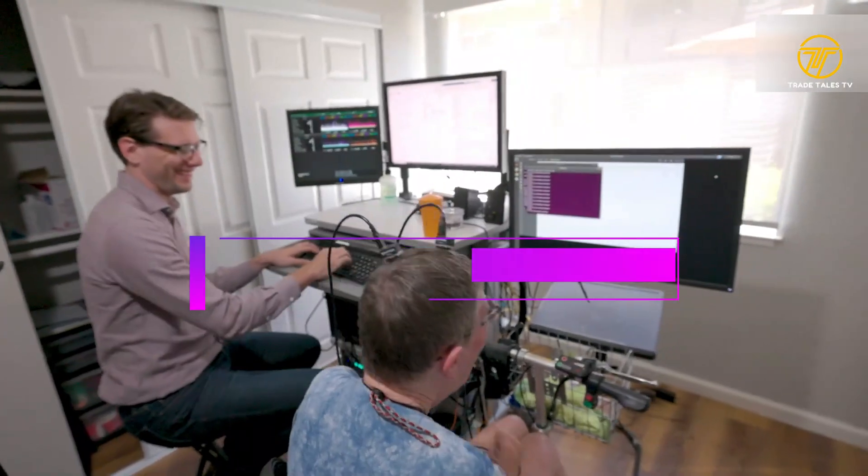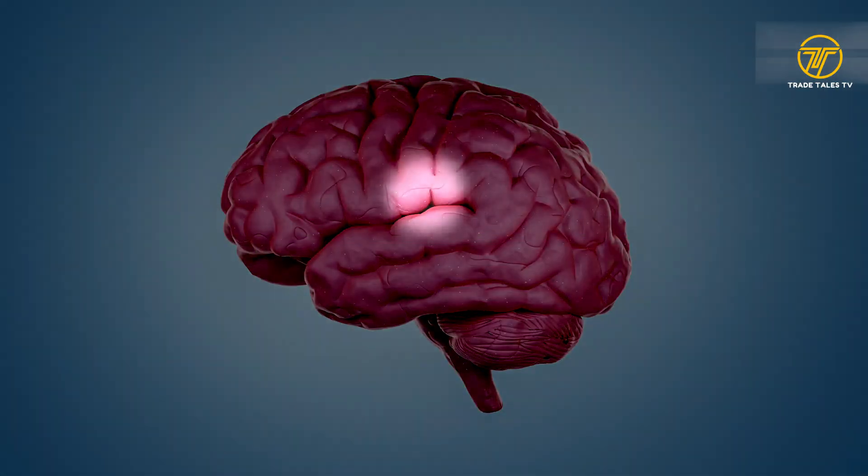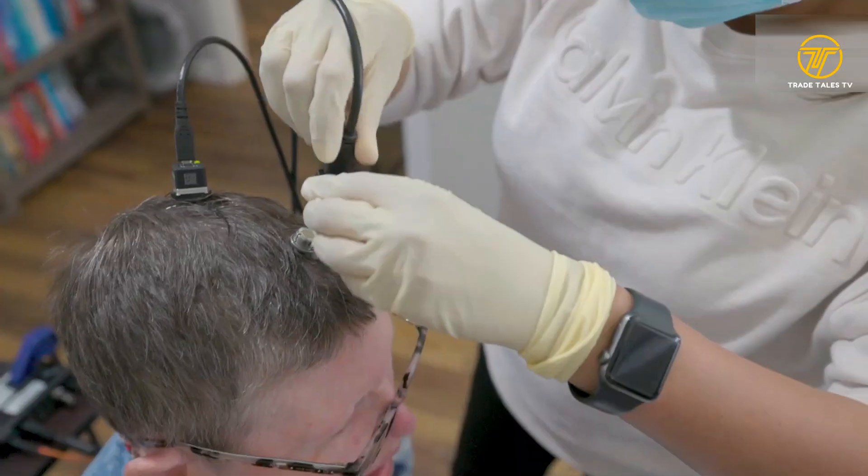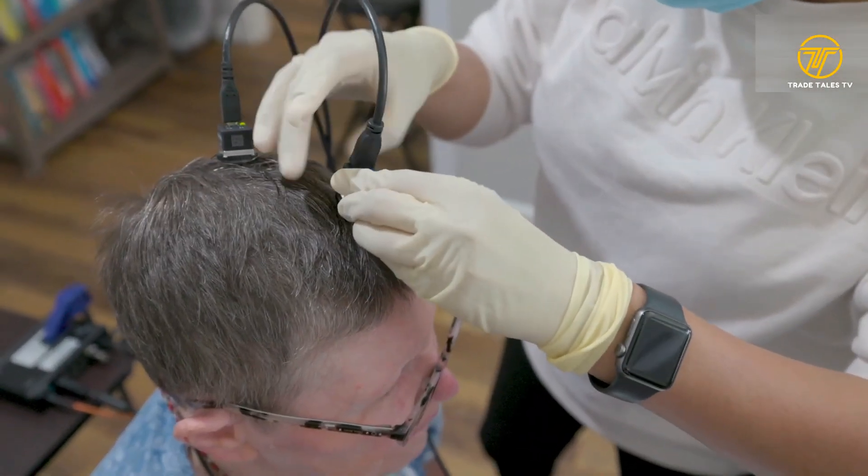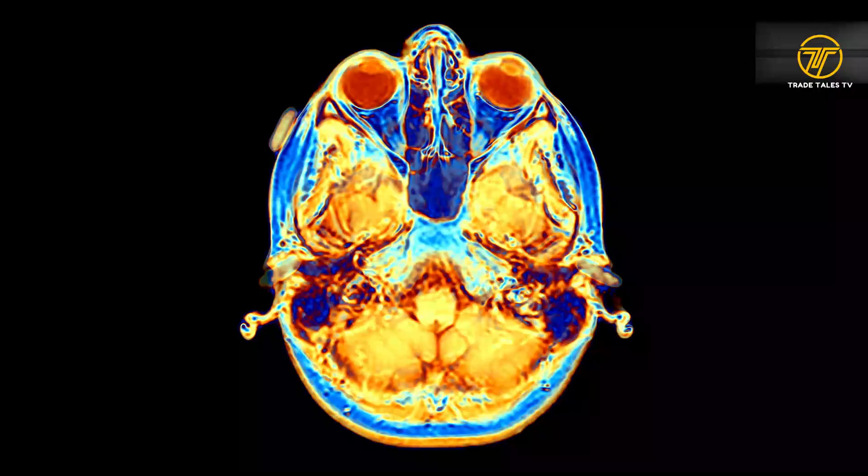MEG, a sophisticated neuroimaging technique, detects and measures the magnetic fields generated by neuronal activity in the brain, offering unprecedented insights into its dynamic processes.